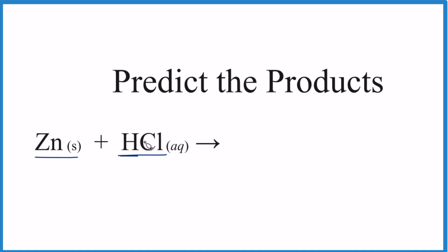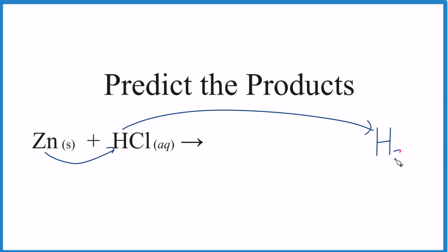This is going to be a single replacement reaction, also called single displacement. The zinc, that's going to push the hydrogen out. So over here, we'll have H for hydrogen, but hydrogen's always H2, and that's going to be a gas.